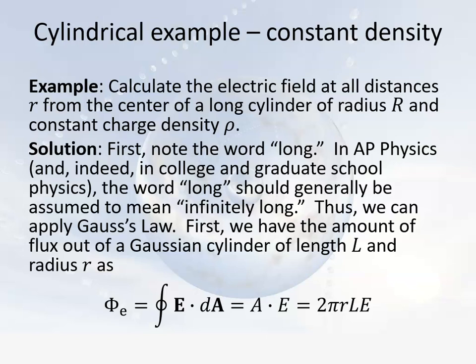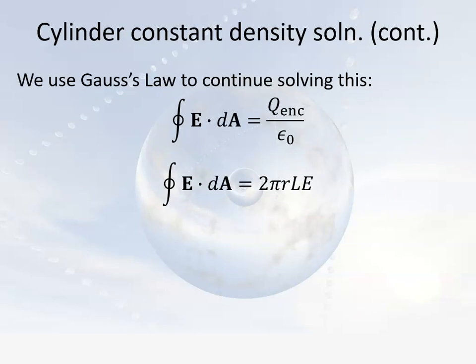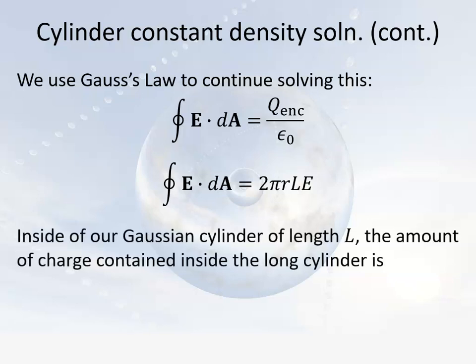The area of our imaginary Gaussian cylinder of length L and radius r is 2πrL, and the electric field strength there is E — that's what we're trying to solve for. Gauss's Law says that flux equals the enclosed charge over epsilon-naught, more precisely that the integral of E-vector dot dA-vector equals enclosed charge over epsilon-naught. We've worked out the flux as 2πrLE. What about the enclosed charge?